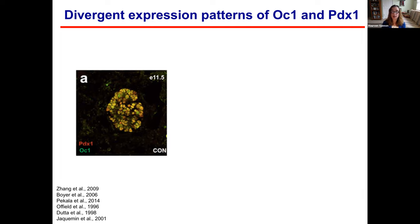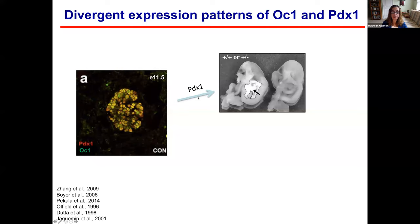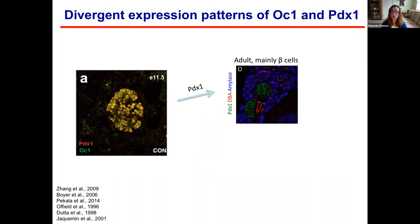PDX1 and OC1 are co-expressed in these multipotent pancreatic progenitors, but they have divergent expression as development proceeds. Mice with null mutation in PDX1 are born lacking a pancreas — PDX1 is absolutely essential for pancreas development. Humans born with null mutations in PDX1 also have the same apancreatic phenotype. PDX1 in the adult pancreas is only expressed in the beta cells, where it regulates many genes including insulin, GLUT2, glucokinase, and other genes important for mature beta cell function.